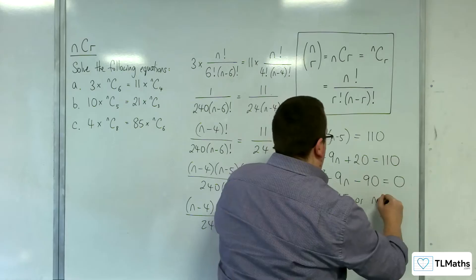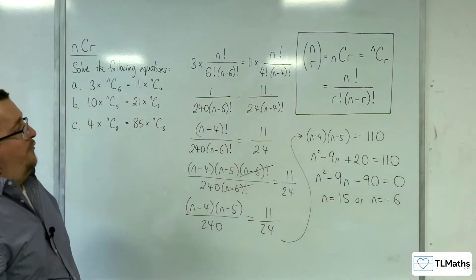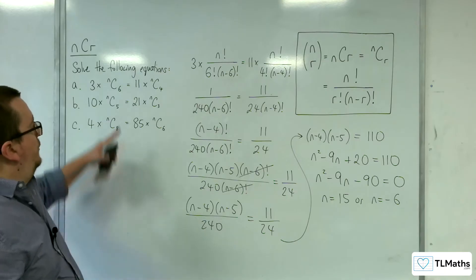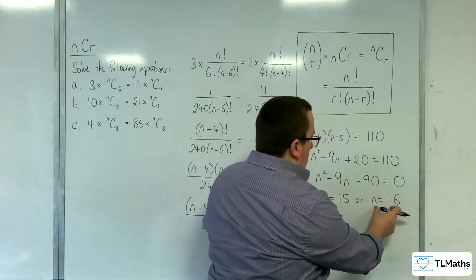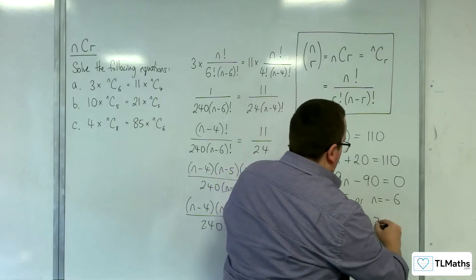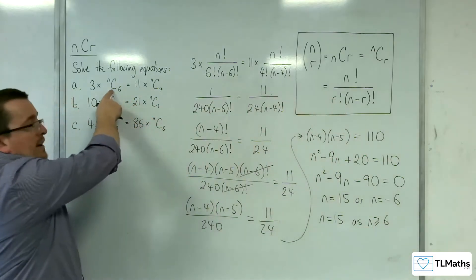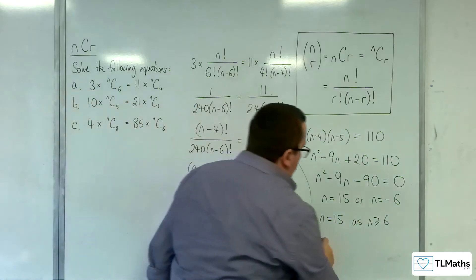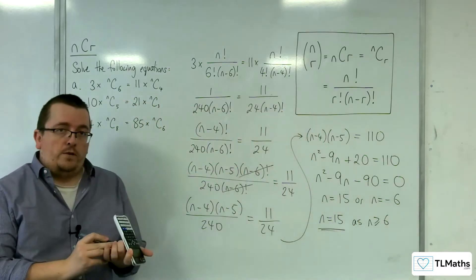n has to be a value greater than or equal to 6, because otherwise nC6 can't exist. So we can't have n equals minus 6. Therefore n equals 15 is the solution to this first equation.